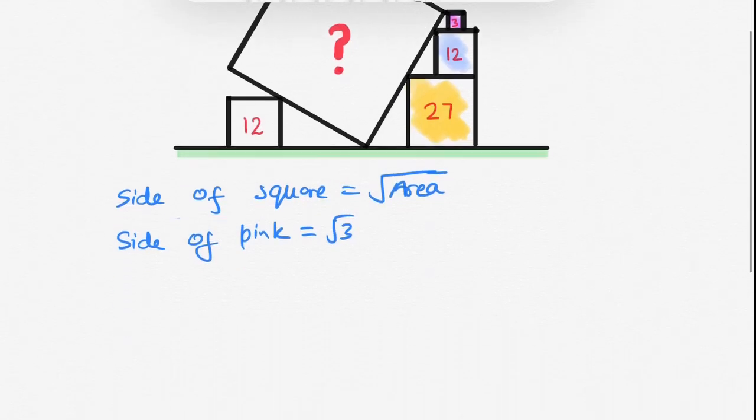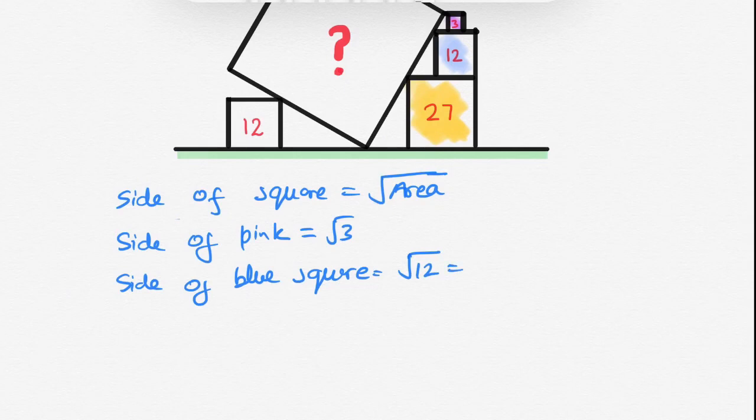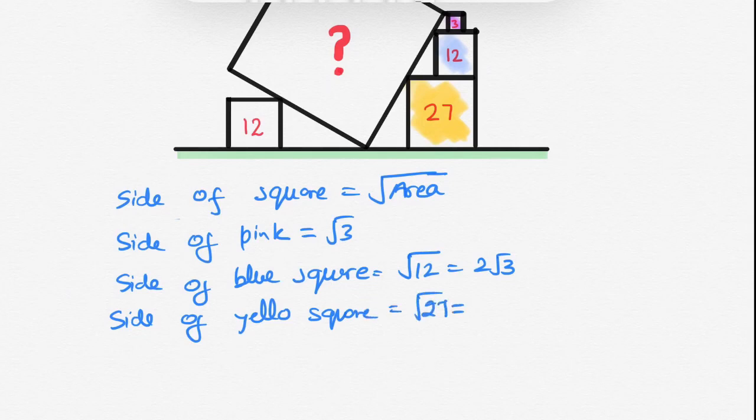Similarly, side of blue square will be square root of 12 and this equals to 2 root 3. Similarly, side of yellow square will be square root of 27 and this equals to 3 root 3.